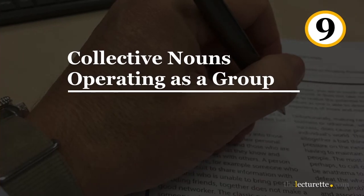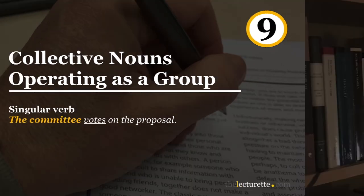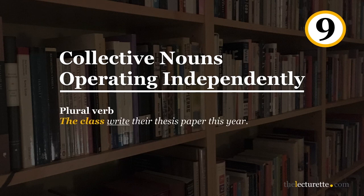Number nine: collective nouns — nouns that are considered singular but are usually made up of multiple members, like team, committee, class, family, etc. — take a singular verb when they operate together as a group, like in 'The committee votes on the proposal.' If the members of the group operate independently, doing different things at different times, you should use a plural verb, like in 'The class write their thesis paper this year.'